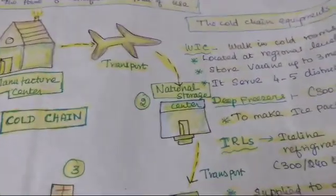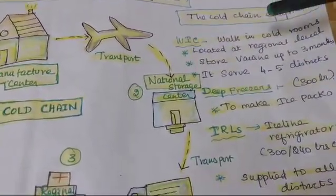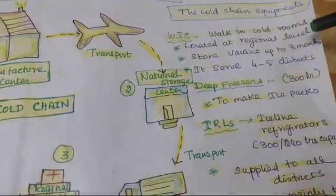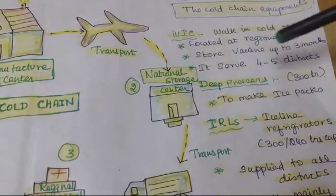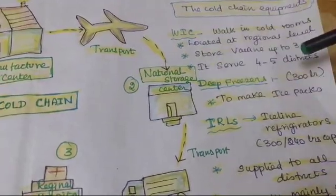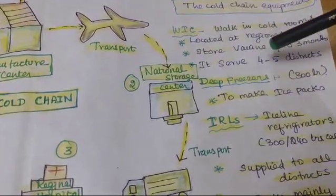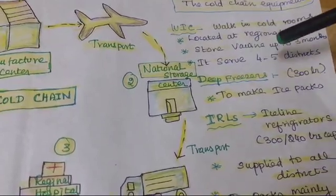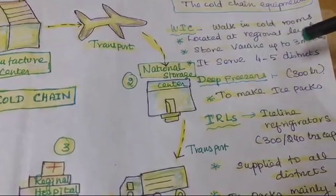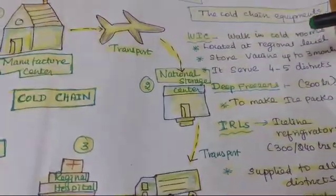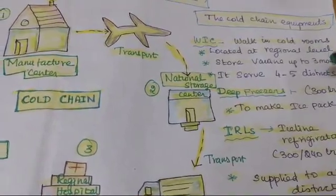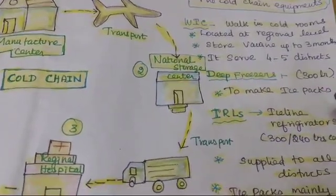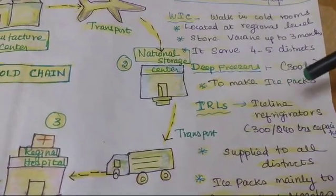The cold chain equipment includes WIKIC, which stands for Walk-In Cold rooms. It is located near the regional center. Vaccines can be stored there for up to 3 months. It serves 4 to 5 districts by distributing vaccines from the regional center. Inside, deep freezers are available, and it has a capacity of 300 liters to make ice packs.